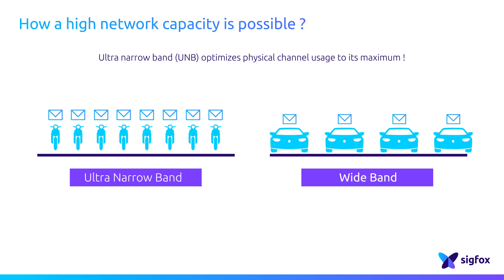This provides a higher capacity of the physical channel. In other words, for small messages, using conventional signals will take more space than UNB.